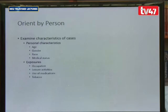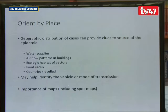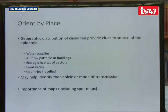For person, you describe personal characteristics: age, gender, race, exposure, smoking, medication, leisure activities, and occupation. For place, you describe where it occurred — the geographical distribution. Is it near a water supply? Is it related to food? Did the person travel to a country known to have that disease? Describing the place may help identify the vehicle or mode of transmission of a particular disease.